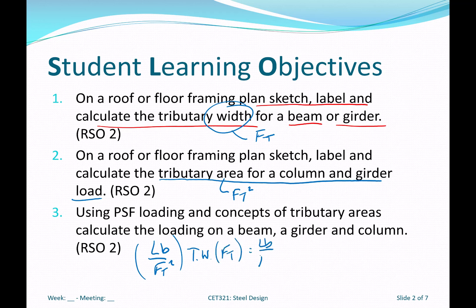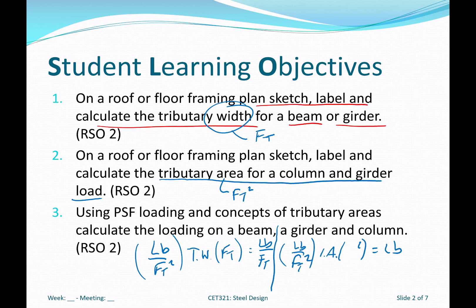If I have load in pounds per foot squared and I multiply it by tributary width, which is in feet, I get pounds per foot — a typical load for a beam. If I have pounds per foot squared and I multiply it by tributary area, which is feet squared, I end up with pounds — a concentrated load. So we're taking general PSF loading, multiplying it by tributary width or tributary area, and getting pounds per foot, kips per foot, pounds, or kips for concentrated loads.